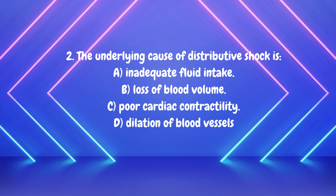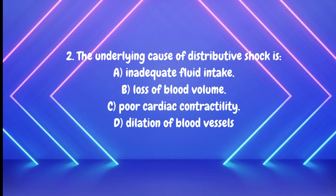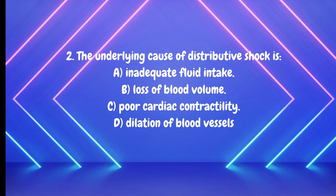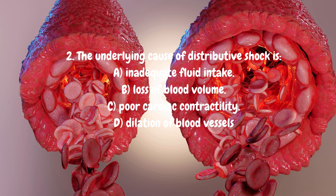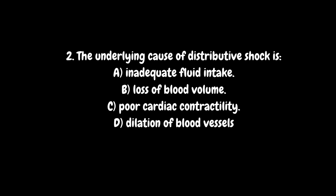Number two: underlying causes of distributive shock — is it inadequate fluid intake, loss of blood volume, poor cardiac contractility, or dilation of the blood vessels? Inadequate fluid intake and loss of blood volume fall into hypovolemic shock. Poor cardiac contractility falls into cardiogenic. That leaves dilation of the blood vessels. There are several types — sepsis, anaphylaxis, and neurogenic — but they all fall into the category of distributive shock.